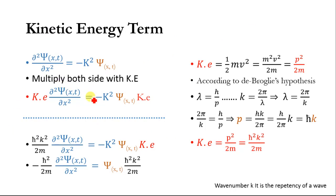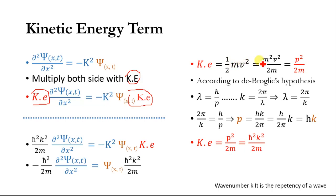Now we multiply both sides with the kinetic energy. Classically, kinetic energy equals (1/2)mv². Multiplying and dividing by m gives m²v²/2m. Since momentum p equals mv, we replace mv with p, and kinetic energy becomes p²/2m.